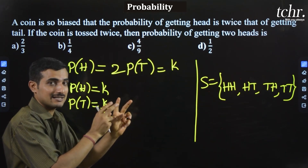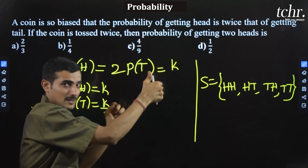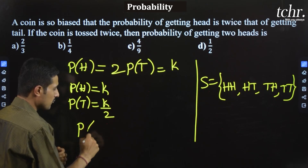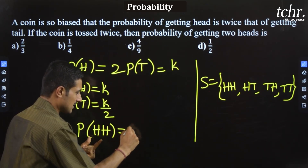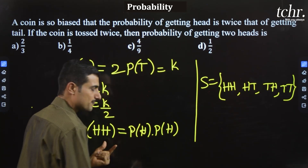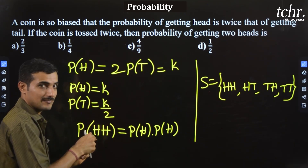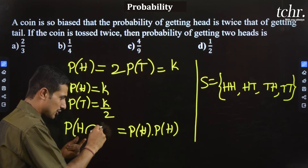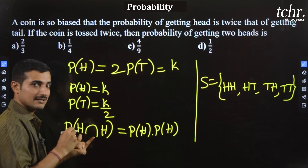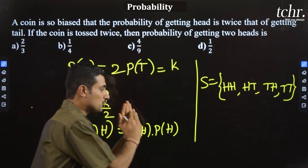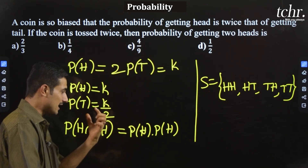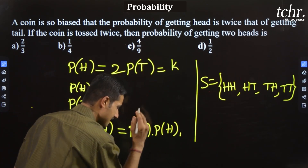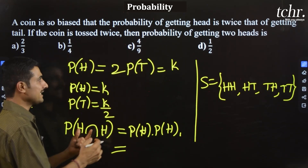These two things are totally independent. First toss giving head and second toss giving head are independent of each other. In this case, the probability of getting two heads equals P(H) multiplied by P(H) — that is P(H) × P(H), which equals k × k = k squared.